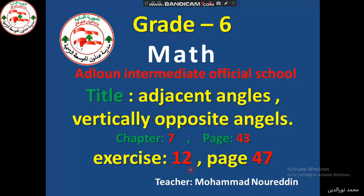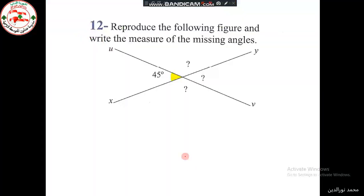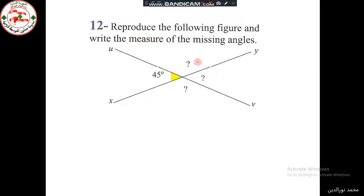Exercise 12 on page 47: reproduce the following figure and write the measure of the missing angles. We have to draw this figure in our copy books and find the measure of the missing angles — this angle, this angle, and this angle.